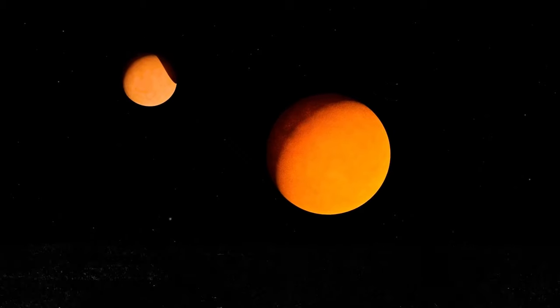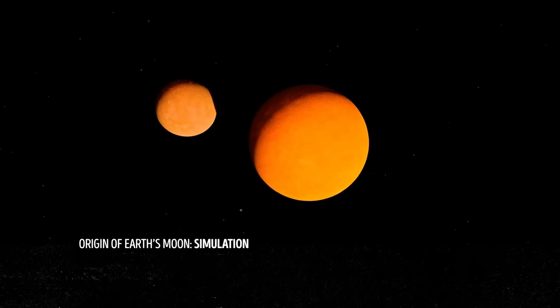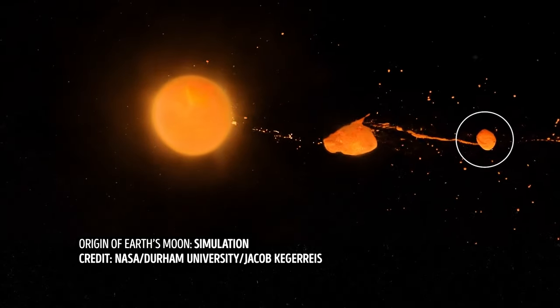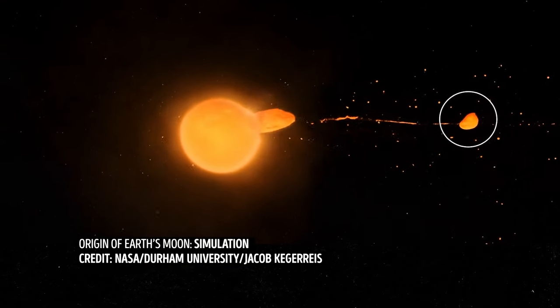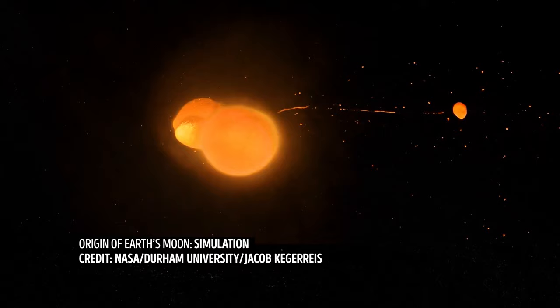The object that collided with Earth could have been about 10% the mass of our home planet and roughly the size of Mars. Well, it makes sense. Earth and the moon do have similar compositions, after all.